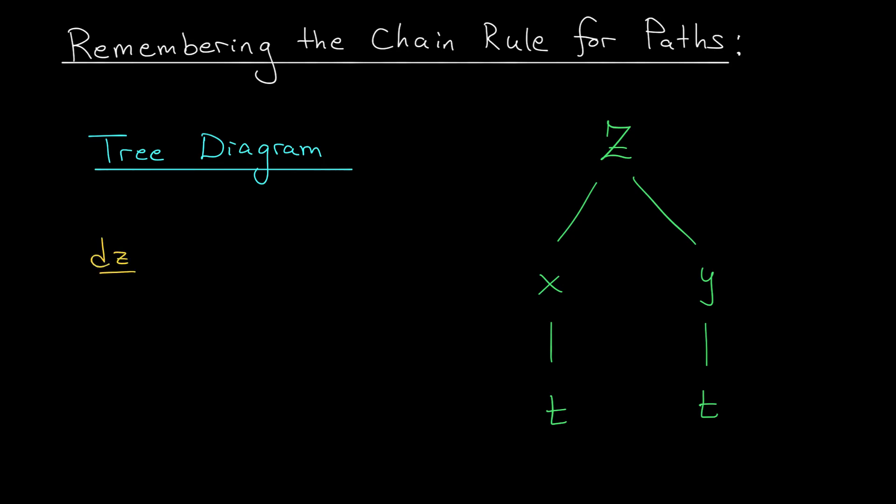The idea behind the tree diagram is that if you want to know, say, dz by dt, then you follow every path down your tree that leads you from z to t. Every time you go down a path, you have to differentiate, and you add the results from different paths at the end.